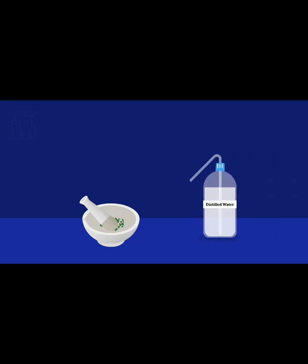Extraction of pigments. Weigh 5 grams of leaf sample. Cut the leaf into small pieces. Grind them thoroughly in a mortar and pestle. Mix with distilled water and grind them thoroughly into a fine paste.